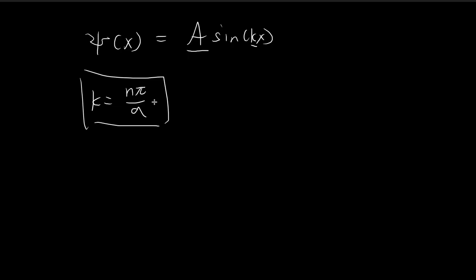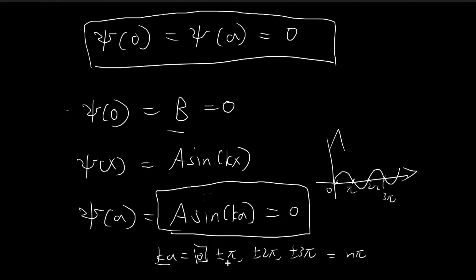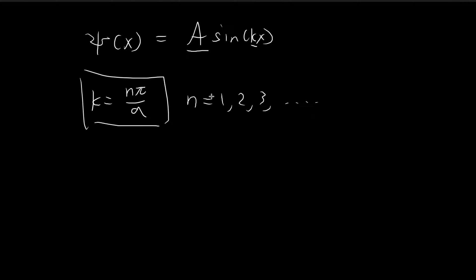The valid values are n = 1, 2, 3, ... to infinity. We exclude n = 0 because that makes ξ(x) = 0 identically, which is not useful. We also exclude negative integers because sin(−kx) = −sin(kx), so including negative n would just be redundant — the negative sign can be absorbed into the constant A when combining solutions.